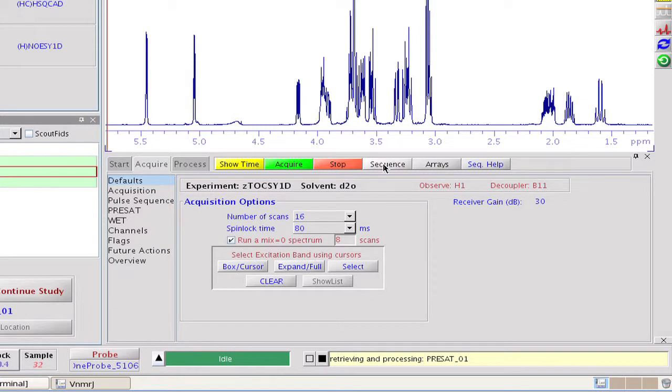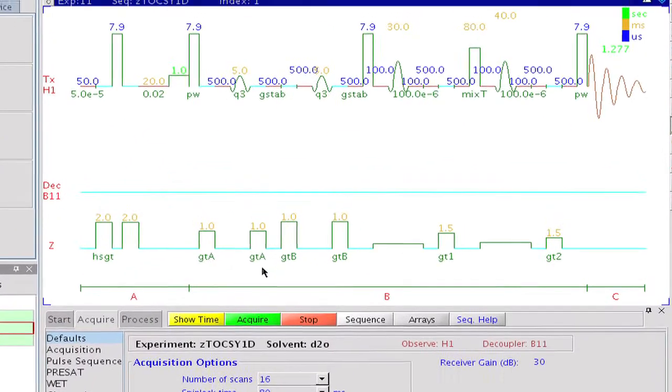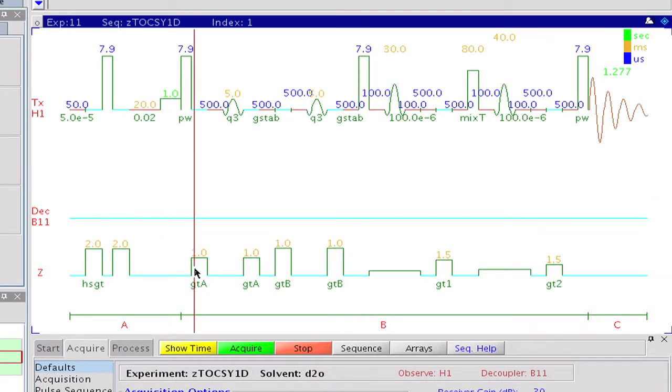In this particular implementation, selective excitation is achieved by a double-pulsed field gradient spin echo block incorporating two selective refocusing pulses on the target proton signal. It is followed by a Dipsy mixing sequence that transfers magnetization from the target proton to its scalar coupling partners.